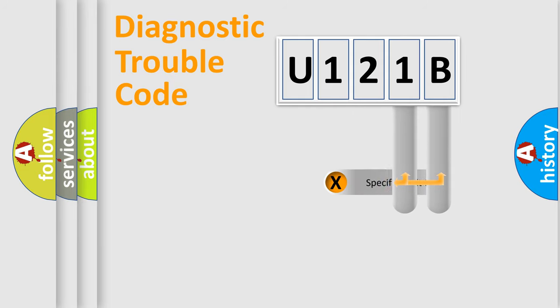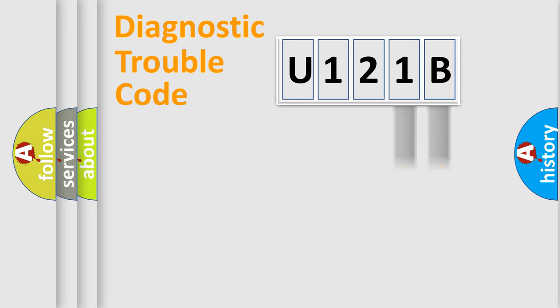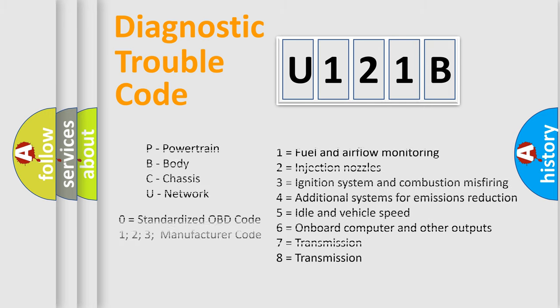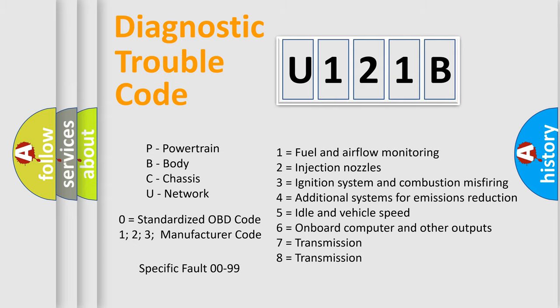Only the last two characters define the specific fault within the group. This division is valid only if the second character code is expressed by the number zero.